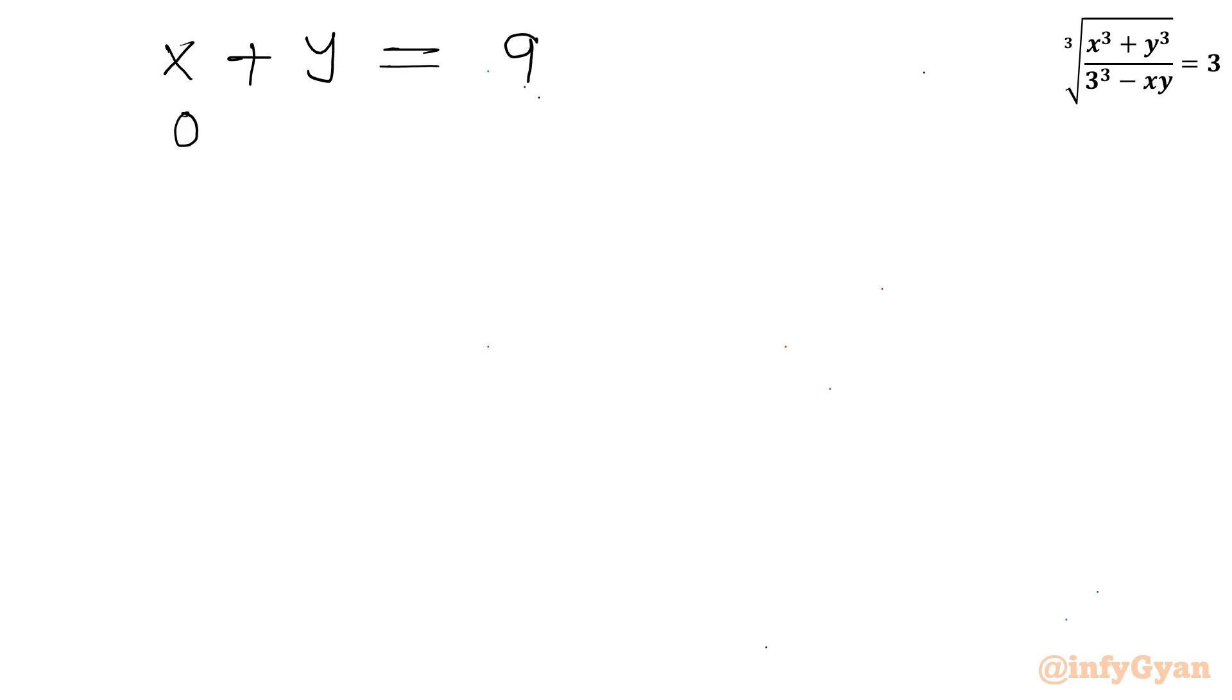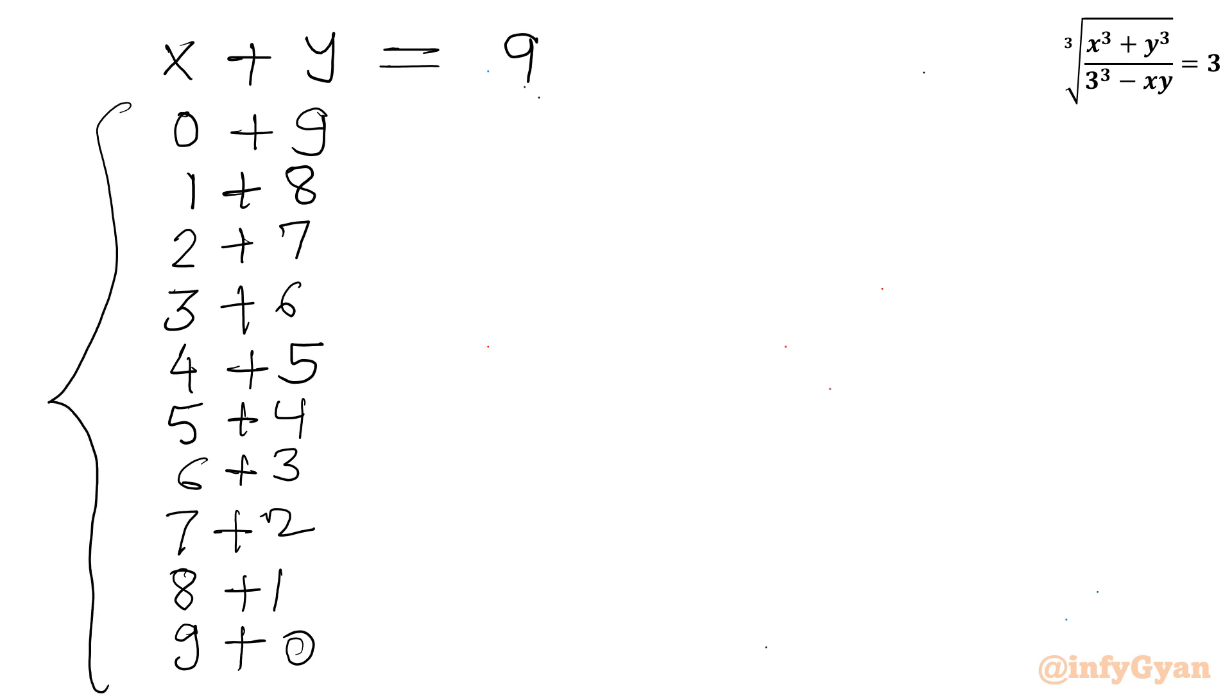So if I will consider x 0 and y 9 then its addition would be 9. Second set or ordered pair I can consider 1, 8. Then I can write 2, 7. Then I can consider 3, 6. Then I can consider 4, 5. And then 5, 4, 6, 3, 7, 2, 8, 1 and 9, 0. So these are our ordered pairs. So overall 10 values are here.